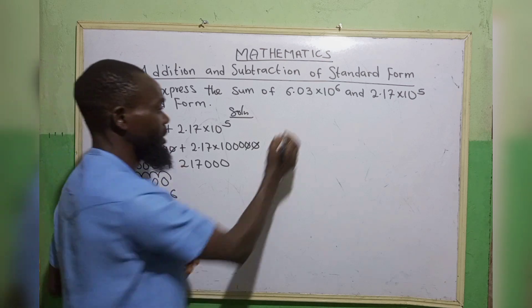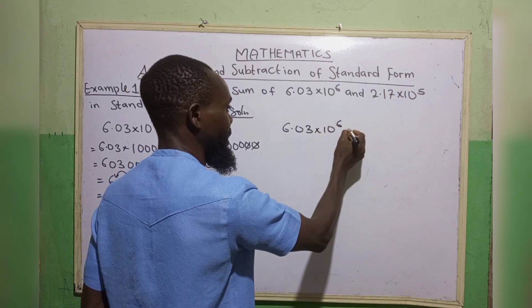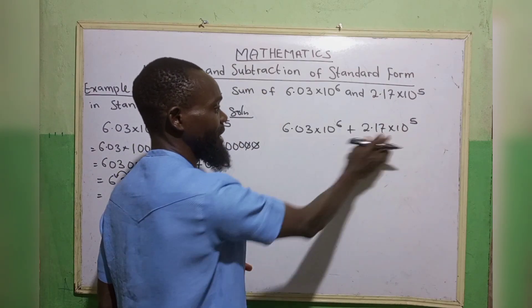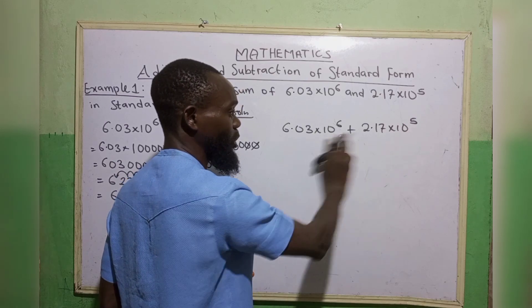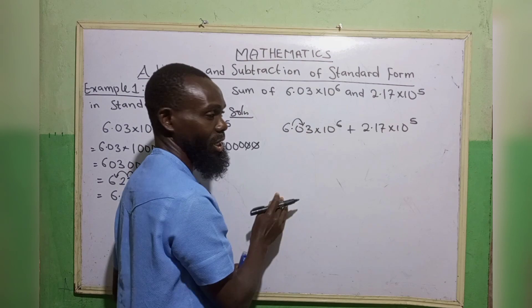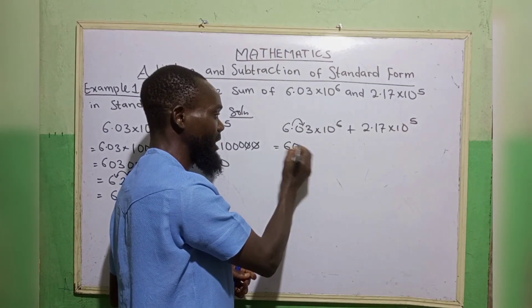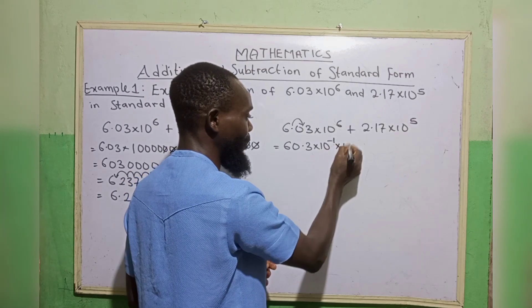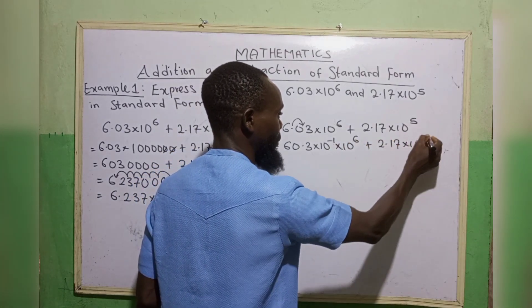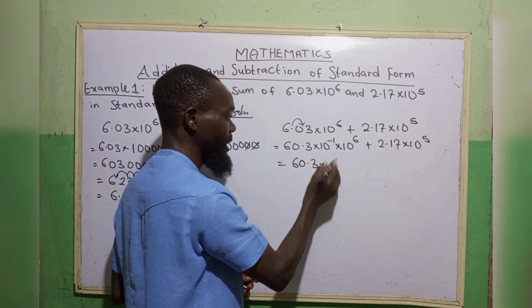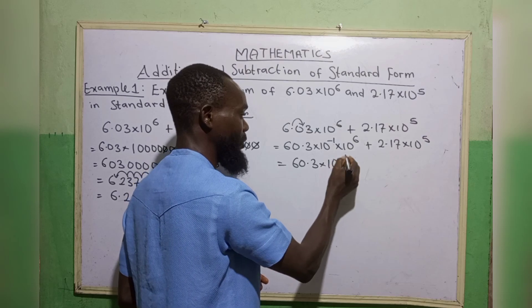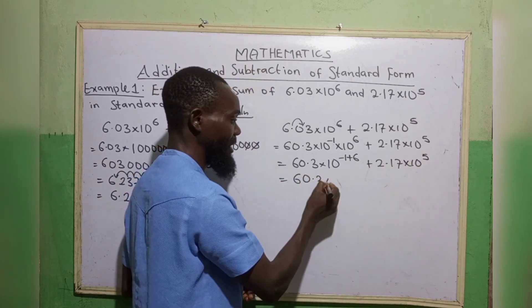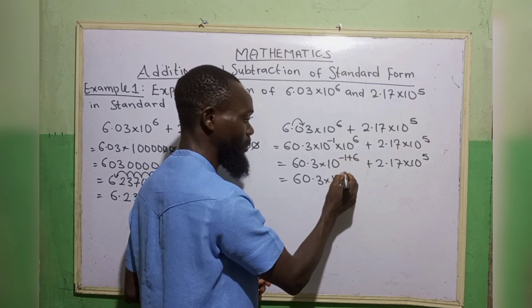Now, what about the second method? We have 6.03 times 10 to the power 6 plus 2.17 times 10 to the power 5. I can express 10 to the power 6 in terms of 10 to the power 5. So in that case, I have to move this point backward — and don't forget, moving backward is negative — so we have 60.3 times 10 to the power minus 1, times 10 to the power 6, plus 2.17 times 10 to the power 5.